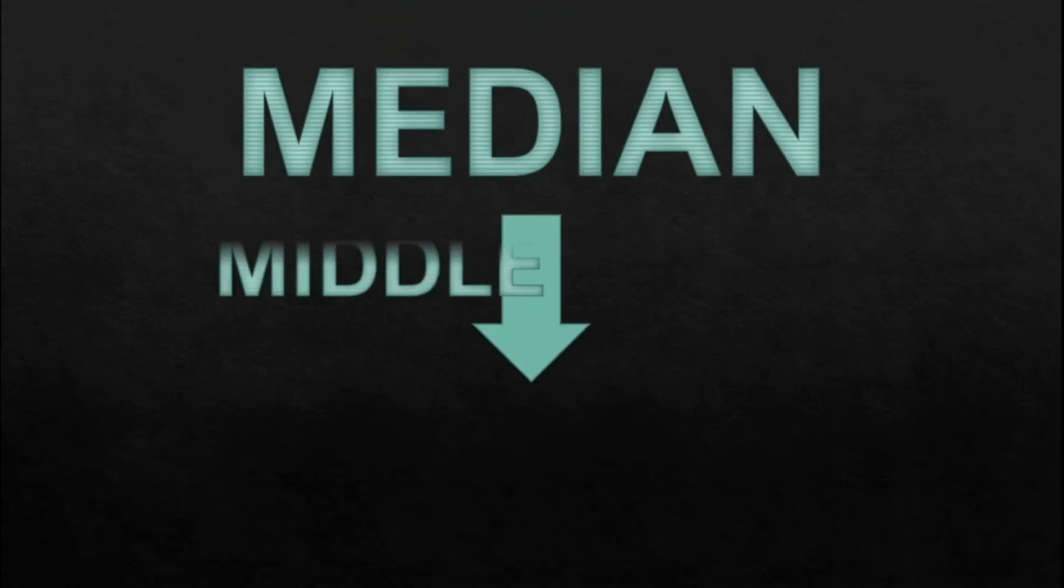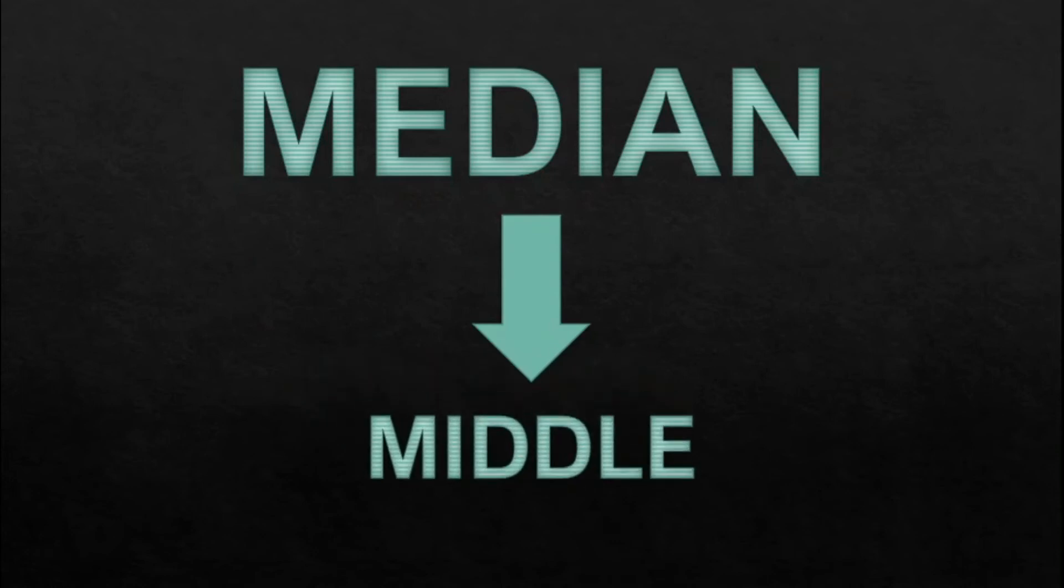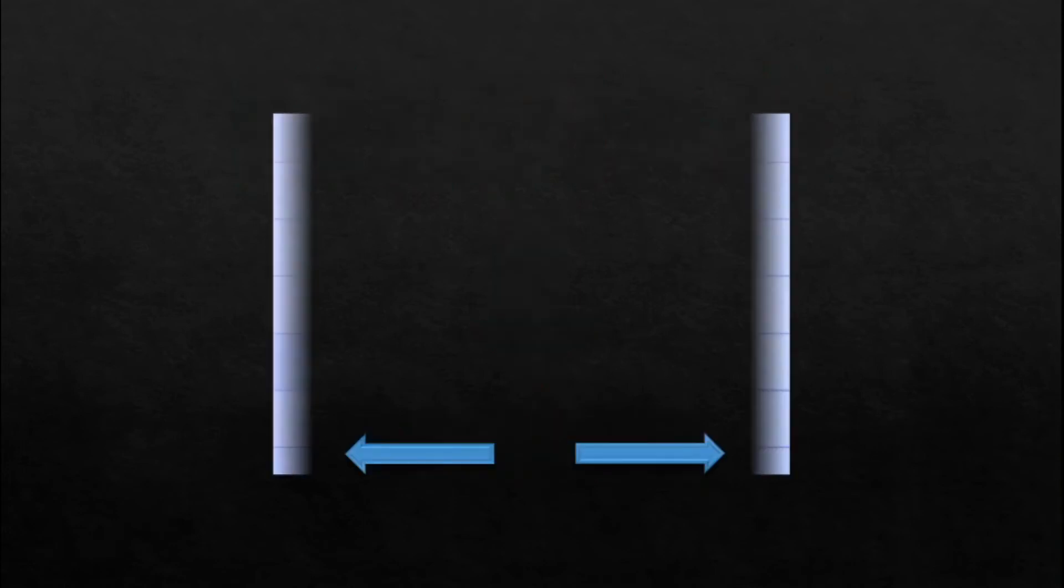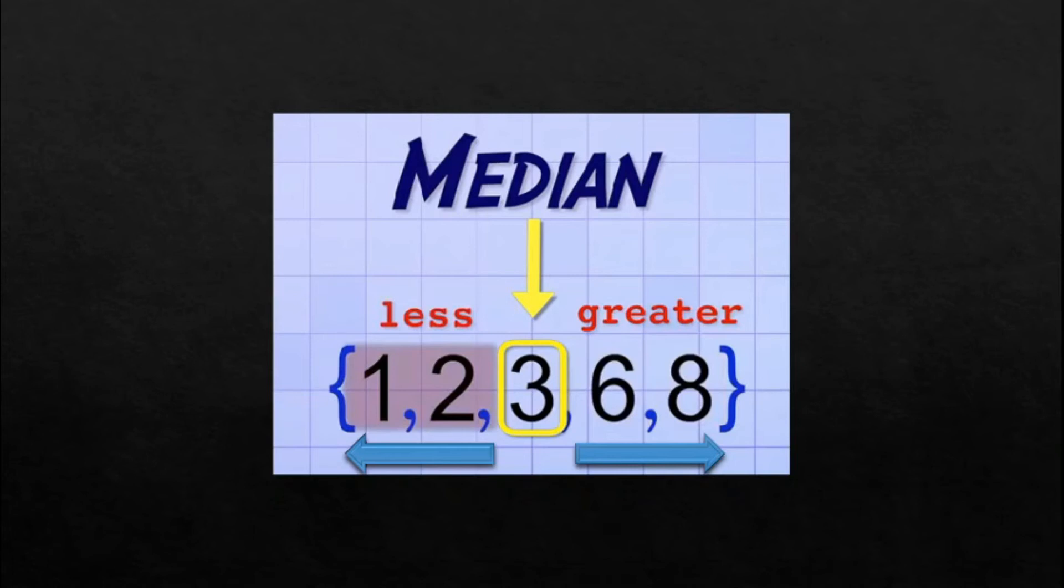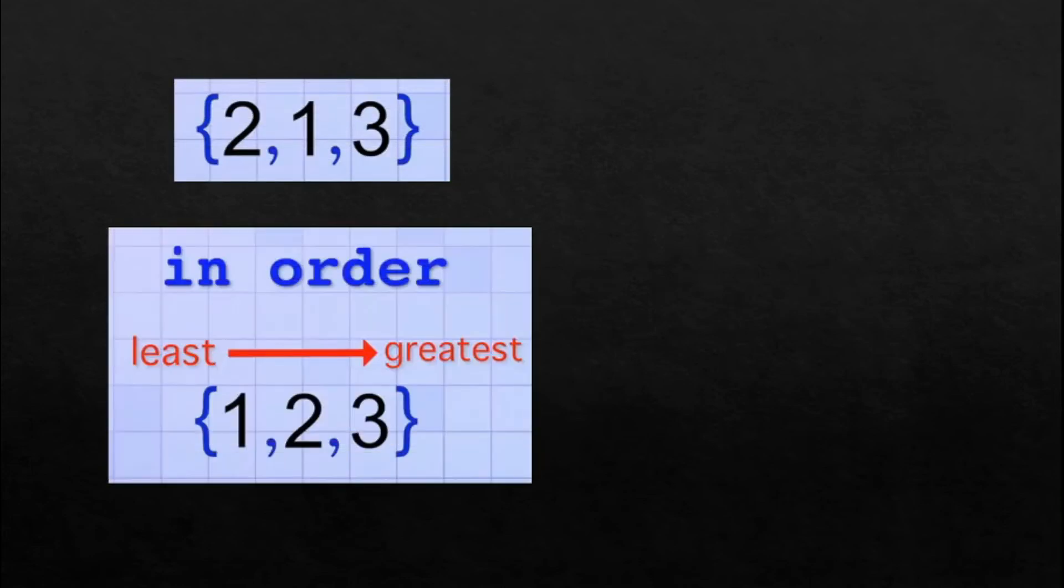Median is the middle of the data set. It's the number that splits the data set into two equally sized groups or halves. One half contains the numbers that are greater than or equal to the median. And the other half contains numbers that are less than or equal to the median. Finding the median is sometimes easy and sometimes hard. That's because finding the median of the data set requires that its members be in order from the least to the greatest or vice versa. And if the data set has a lot of numbers, it might take a lot of work to put them in order. To make it easier, let's start with a small data set that is not in order. It would be easier to list them from the least to greatest.